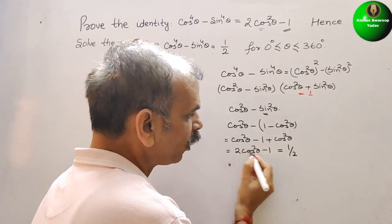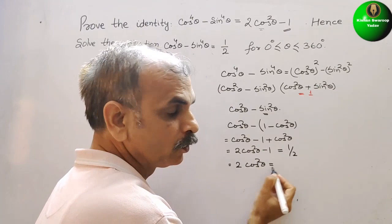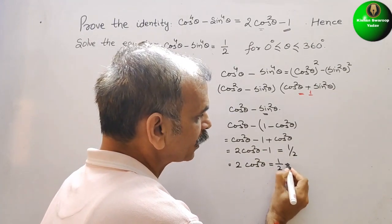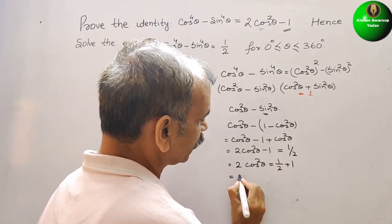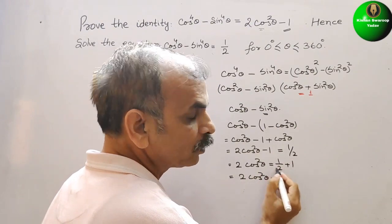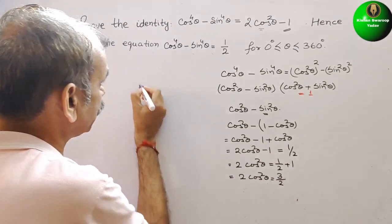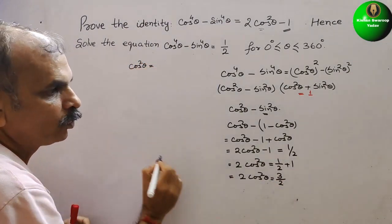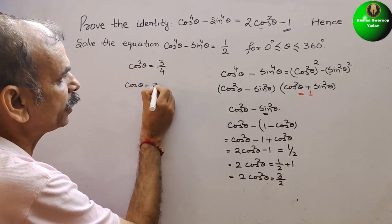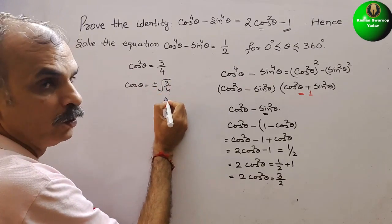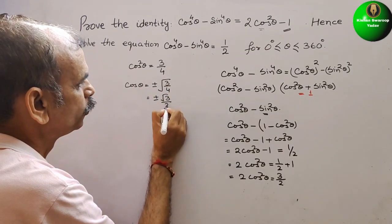Now, this minus 1 will go to the other side, so 2 cos square theta equals 1 by 2 plus 1, which gives 2 cos square theta equal to 3 by 2. So cos square theta is equal to 3 by 4. Therefore cos theta is plus or minus root of 3 by 4, which is equal to plus or minus root 3 by 2.